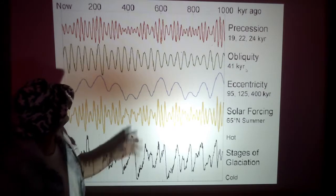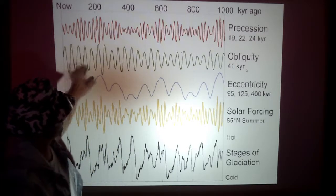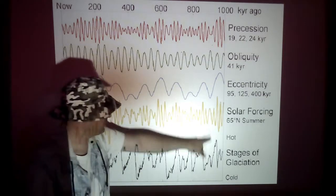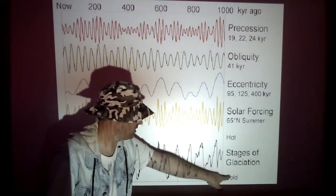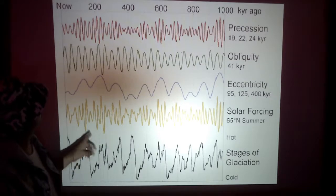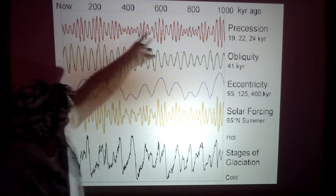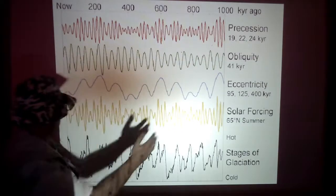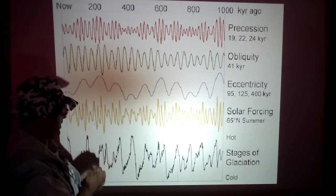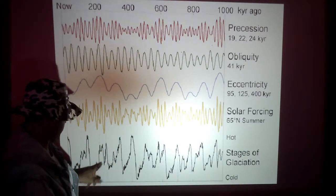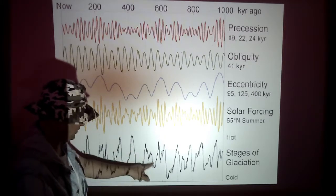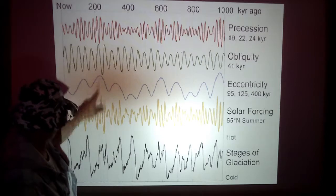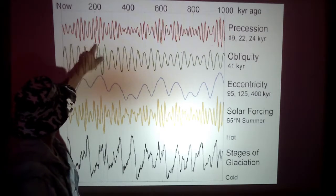This graph shows our precession, eccentricity, solar forcing, and the stages of glaciation across roughly 1 million years. We can see cycles of hot and cold that seem to correspond with these peaks all the way across the million-year span.